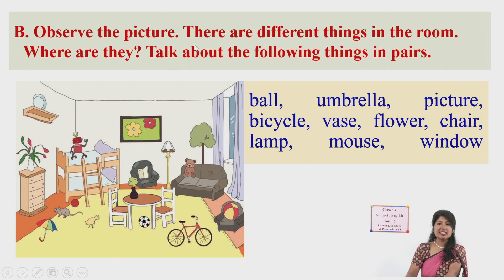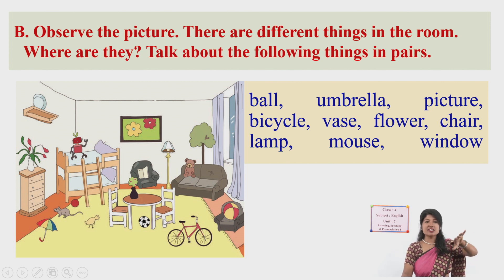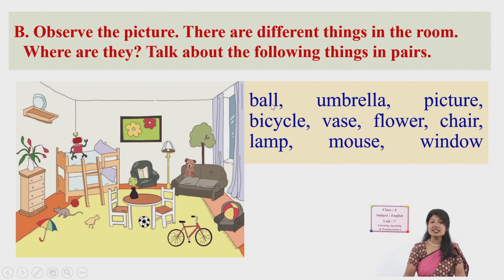Now, observe the picture. There are different things in the room — where are they? Talk about the following things in pairs: ball, umbrella, picture, bicycle, vase, flower, chair, lamp, mouse, and window. Where is the ball? There are actually two balls here — one is on the sofa and another is under the table.